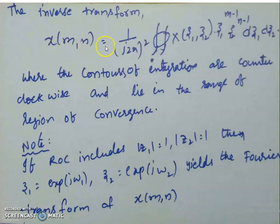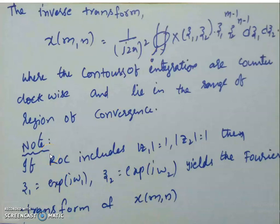The inverse Z-transform is defined as X(m, n) equal to (1/(j2π)²) times a contour integration over the ROC of X(Z₁, Z₂) times Z₁ to the power of m minus 1 times Z₂ to the power of n minus 1, dZ₁ dZ₂. The relation between the Fourier transform and the Z-transform is: if the ROC includes |Z₁| = 1 and |Z₂| = 1 (the unit circles), then setting Z₁ = e to the power of jω₁ and Z₂ = e to the power of jω₂ yields the Fourier transform of X(m, n). So the DTFT exists only if the ROC includes the unit circles.